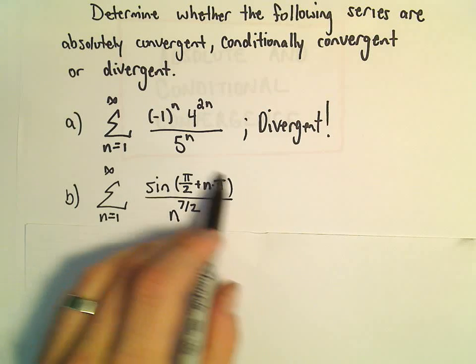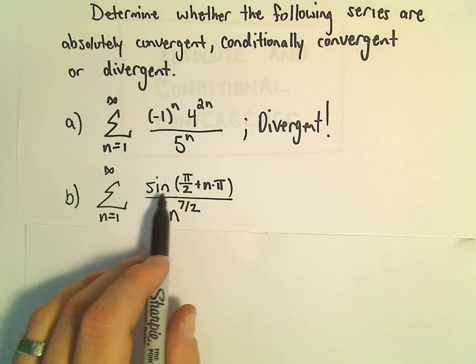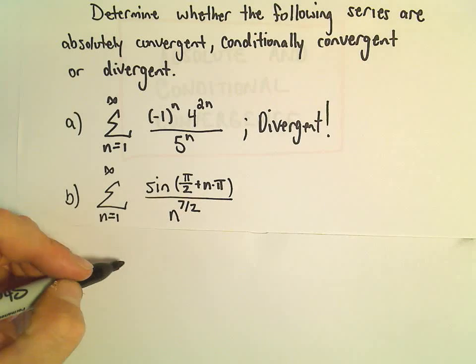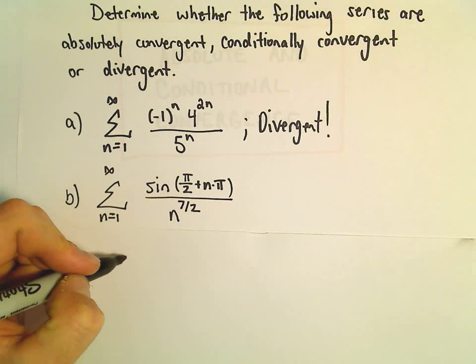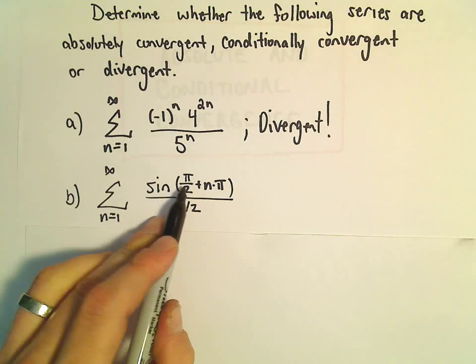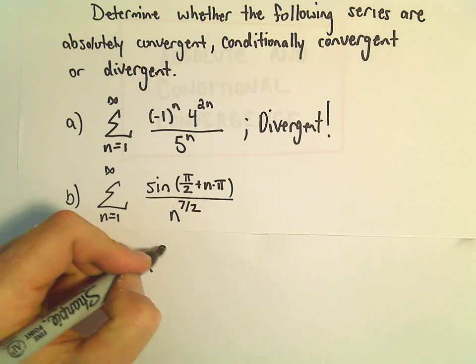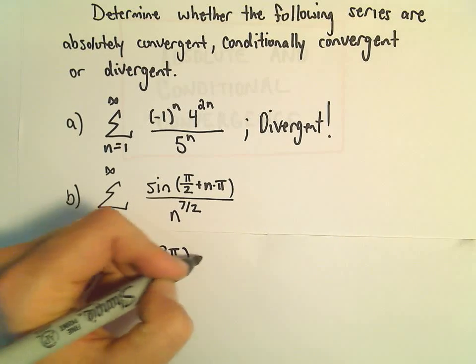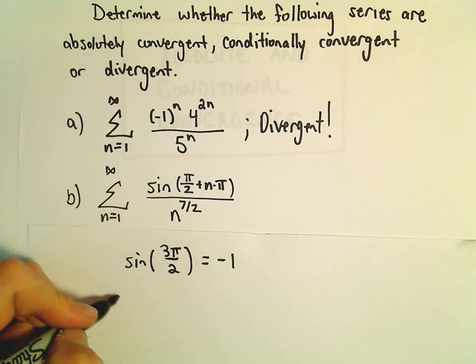I would probably be thrown off by this stuff at the very beginning, this sine of pi over 2 plus n pi. But notice if we plug in n equals 1, we'll get sine of pi over 2 plus pi. That's 3 pi over 2. Sine of 3 pi over 2 just equals negative 1.